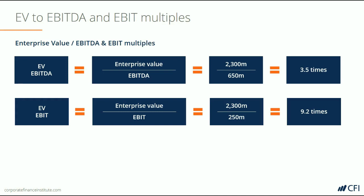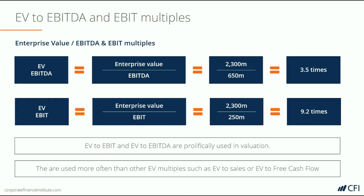So we'll have to look at other metrics like free cash flow to the firm to properly understand the cash flow profile and valuation of this company. It's important to note that EV to EBIT and EV to EBITDA are some of the most commonly used metrics in valuation. They're used much more than EV to sales or EV to free cash flow. EV to EBITDA is probably the most common metric you will encounter in business valuation.